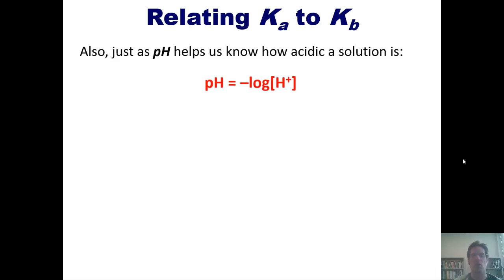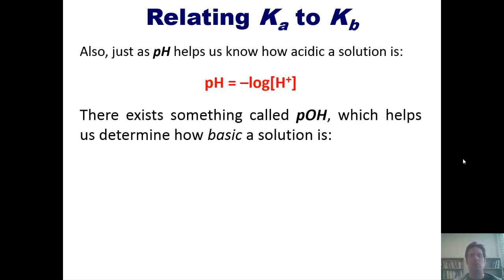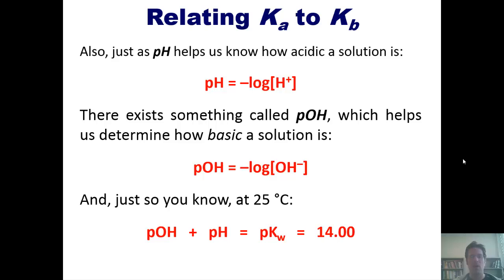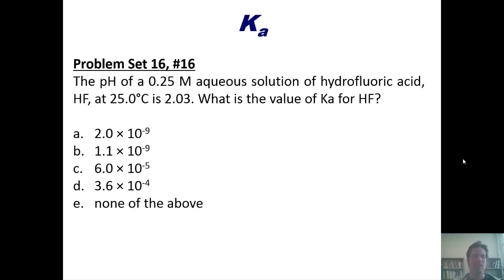Also, just as pH, whose equation is given here, helps us know how acidic a solution is, there exists something called pOH, which, of course, I've discussed in an earlier video as well, which helps us to determine how basic a solution is. pOH is given by negative log of the concentration of hydroxide. And, just so you know, at 25 degrees Celsius, pOH plus pH equals pKw, which is 14. I've also taught you this earlier, but it's a useful mathematical equation to have in your minds for solving cool problems.